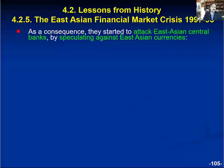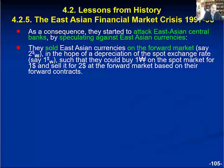As a consequence, these speculators started to attack East Asian central banks by speculating against East Asian currencies. They sold East Asian currencies on the forward market — let's say for $2 per won (the struck-through W is the symbol of the South Korean currency won). They sold won for $2 on the forward market in the hope of a depreciation of the won on the spot exchange market, let's say to a level of $1 per won, such that they could buy one won on the spot market for $1 and sell it for $2 on the forward market based on their forward contracts. This is of course a quite profitable kind of deal.